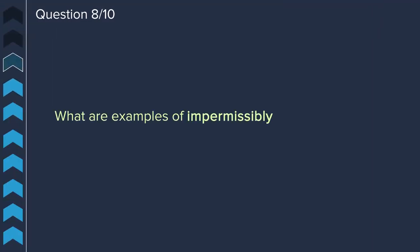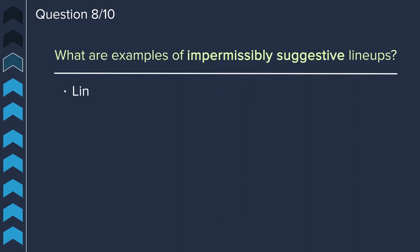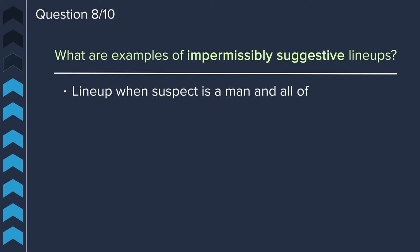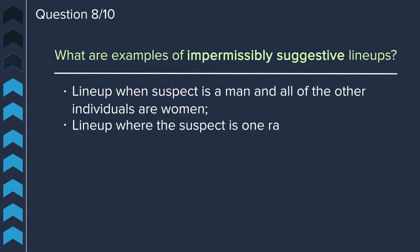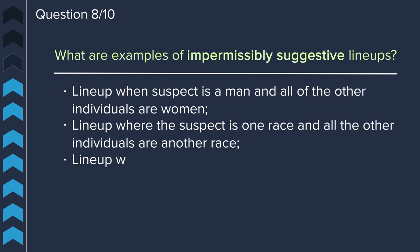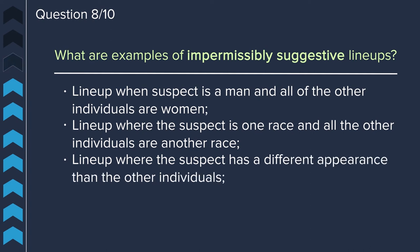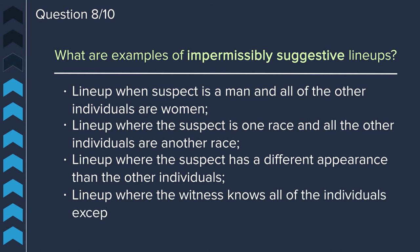Question eight: what are examples of impermissibly suggestive lineups? Examples include lineups where the suspect is a man and all other individuals are women, or a lineup where the suspect is one race and all others are another race, or where the suspect has a radically different appearance than others, or where the witness knows all individuals except the suspect.